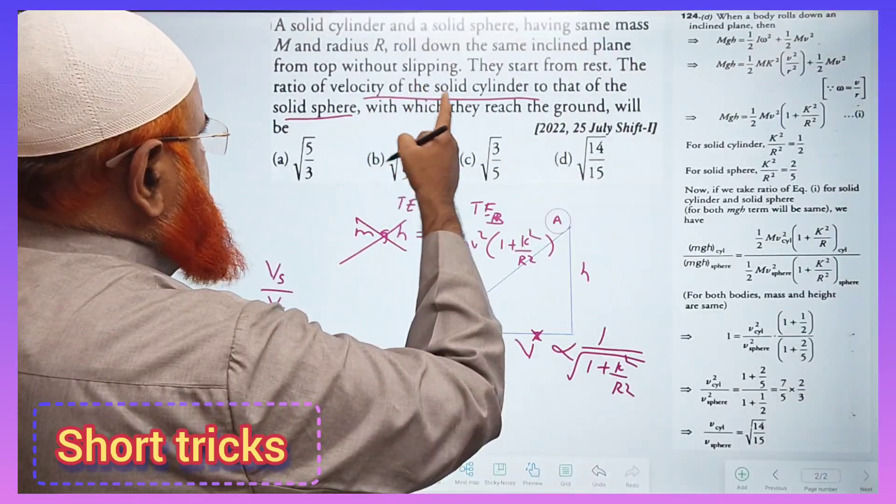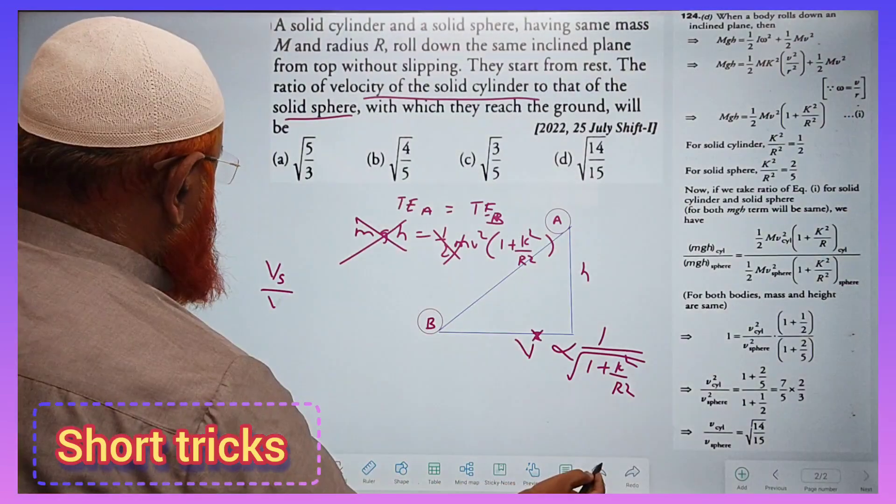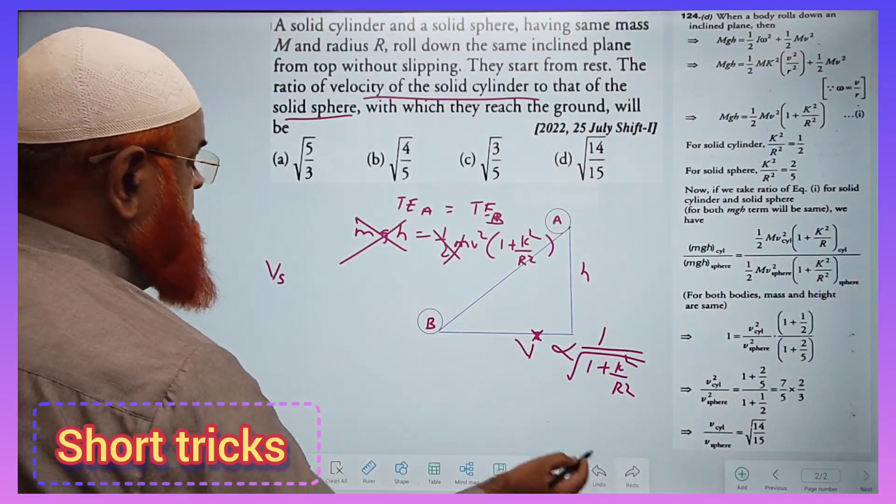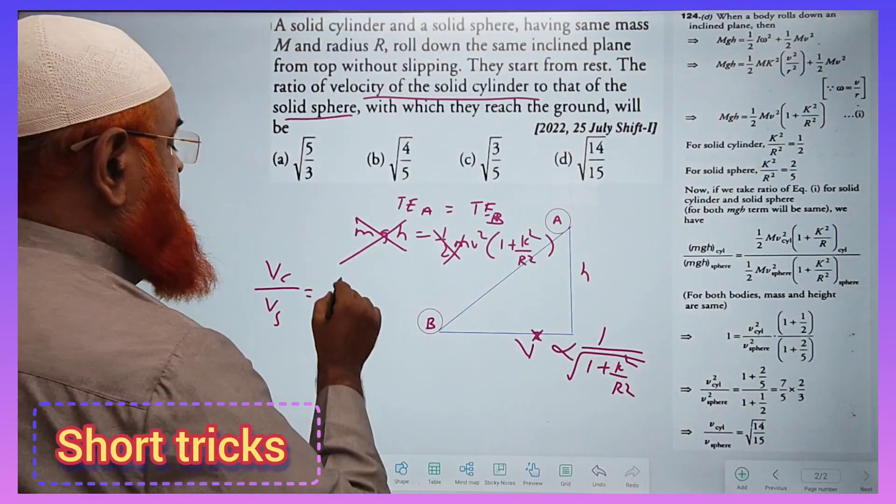Okay so from this first I think cylinder then I think it's a sphere. So now you can just see first is cylinder and then it is a sphere here now. So we can write now.